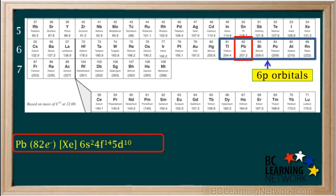The group of p orbitals in period 6 are the 6p orbitals, and since lead is the second element in the 6p group of orbitals, its configuration ends in 6p².